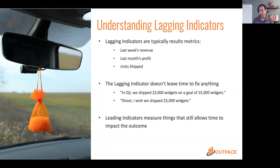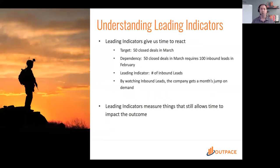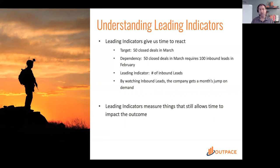Leading indicators are a little bit different — they tell us a result early enough that we still have time to react. We can see something coming in short and do something before the end results get worse. For example, if we want 50 closed deals in March, the lagging indicator is counting closed deals at the end of March — great, we had 50, or 40, or 60 — but it's already over.